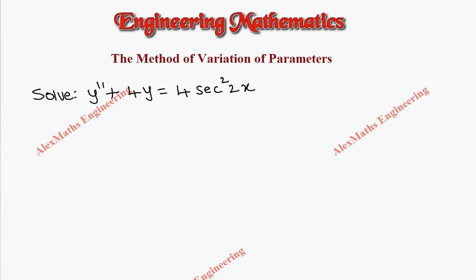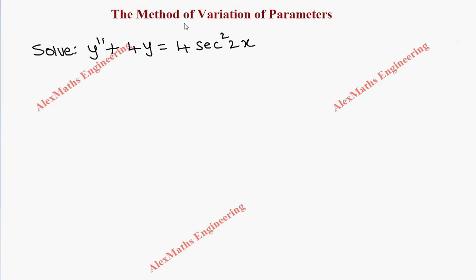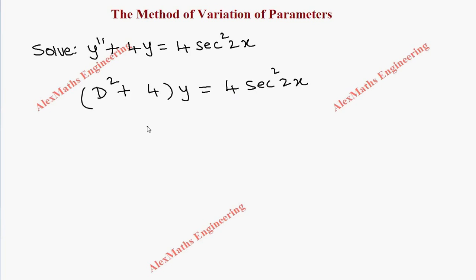Hi students, this is Alex here. In this video we are going to solve a problem based on the method of variation of parameters. The equation is (D² + 4)y = 4 sec²(2x).